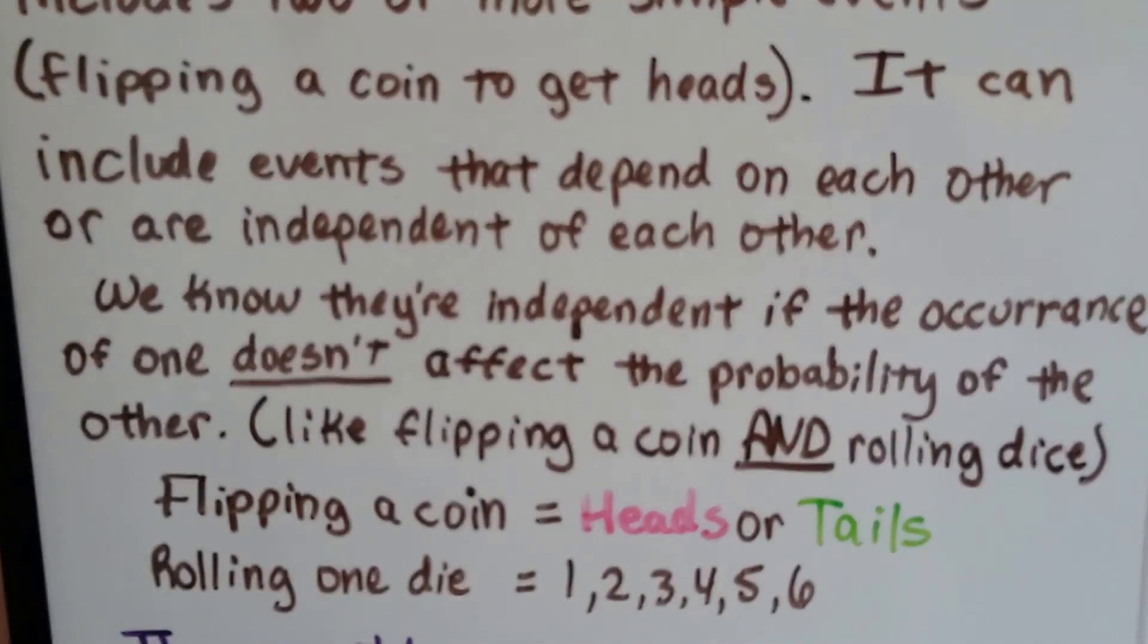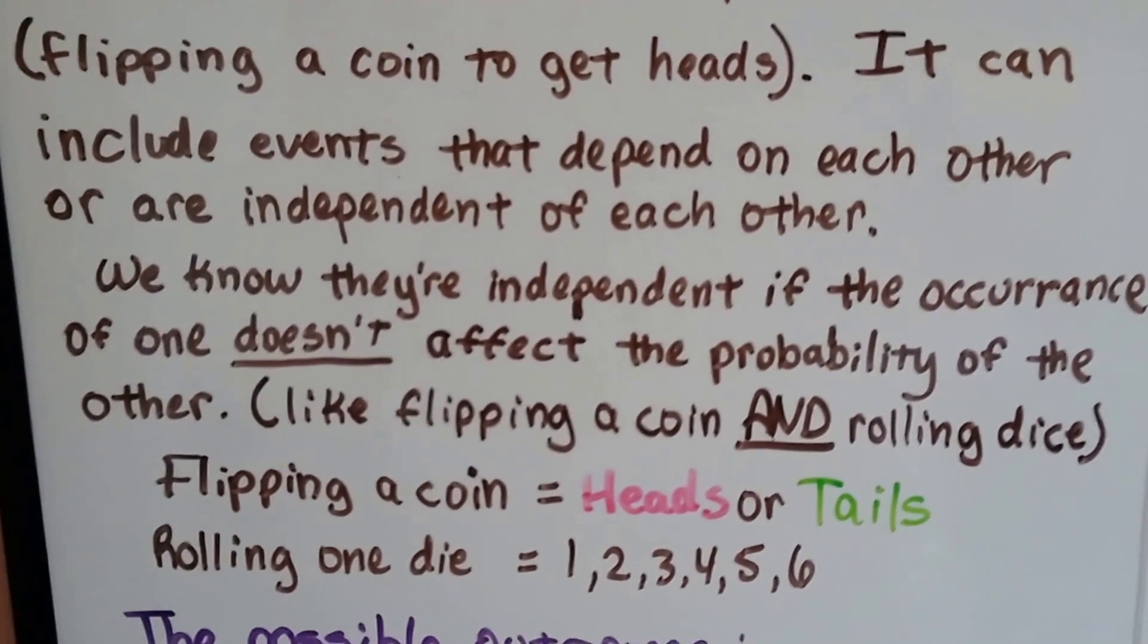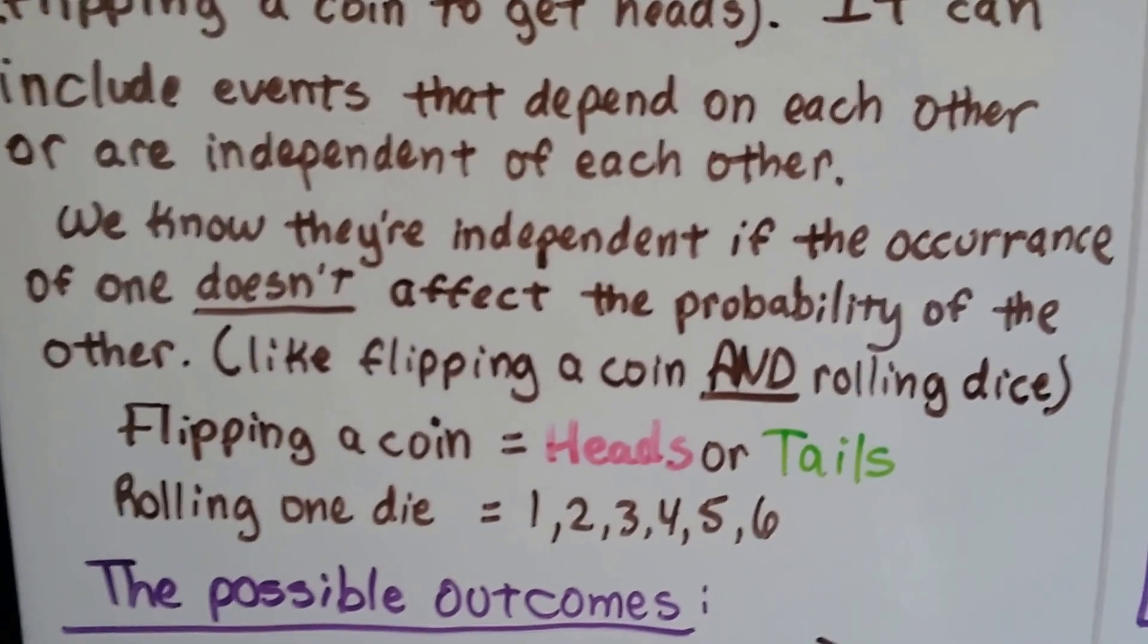We know they're independent if the occurrence of one doesn't affect the probability of the other, like flipping a coin and rolling dice.